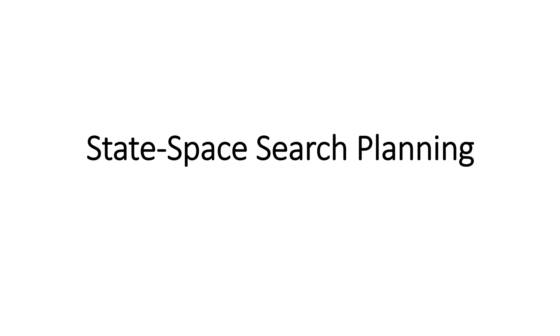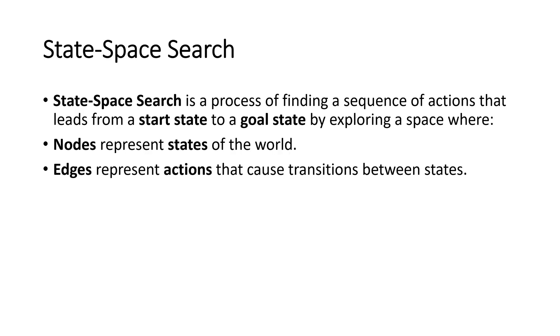Hello students, welcome back. In today's video, we will see what is state space search planning. It is one of the types of planning. State space search is a process of finding a sequence of actions that leads from a start state to a goal state, by exploring a space where the nodes represent states of the world and edges represent the actions that cause transitions between the states.